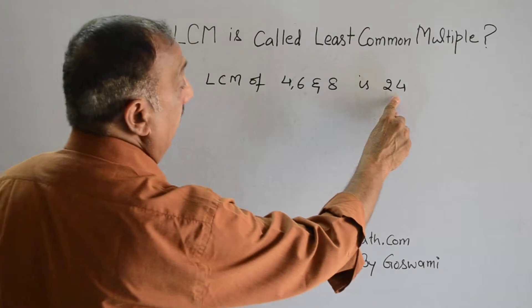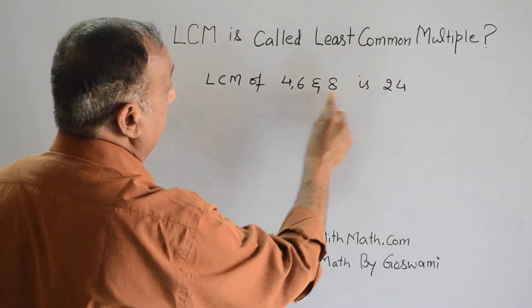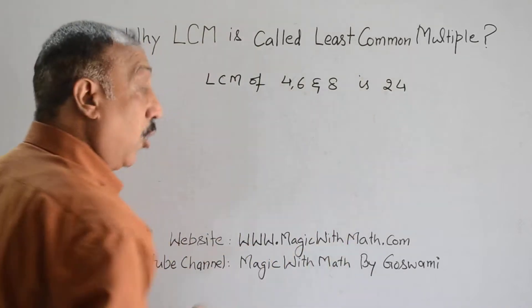Because 24 is the smallest number which can be divided by 4, 6, and 8. No number smaller than this.